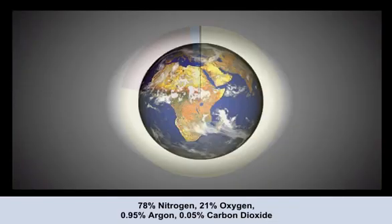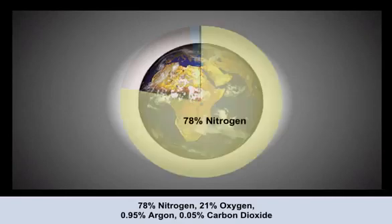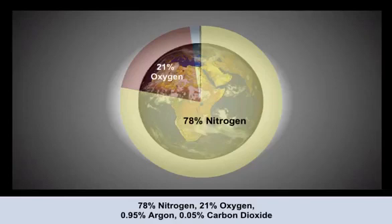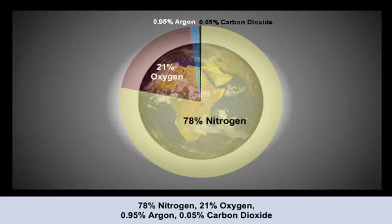There are various major gases that make up our atmosphere. The most common gas is nitrogen, which accounts for about 78% of the atmosphere. Oxygen is sometimes misconceived as being the most abundant gas, but it represents only 21%. Just under 1% is argon, with carbon dioxide and a few others making up the rest.